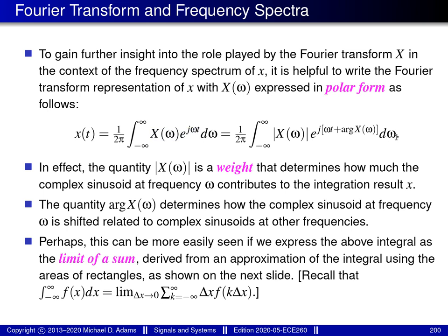If I do this, what I end up with is this equation on the right-hand side. Looking at this formula more carefully, essentially what we're doing is integrating a complex sinusoid with frequency omega. In particular, when computing this integral, we're shifting this complex sinusoid by an amount that depends on the argument of big X of omega — in other words, the argument of the Fourier transform. And we're also scaling the amplitude of the complex sinusoid by the magnitude of big X of omega, in other words, the magnitude of the Fourier transform.